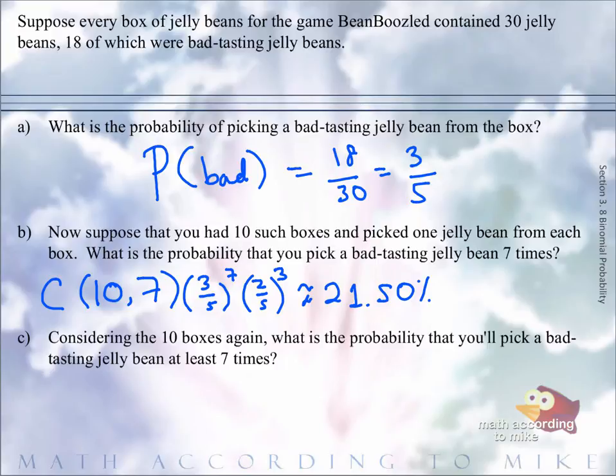Part C. Considering the same 10 boxes, what is the probability you'll pick a bad-tasting jelly bean at least seven times? So because we have the phrasing at least, that means we need to write this in terms of exactlys. That means we want exactly seven bad jelly beans, or exactly eight, or exactly nine, or exactly 10.